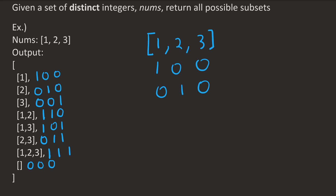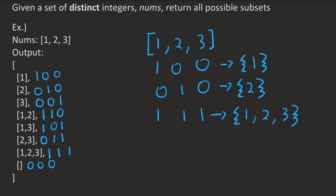Following this logic, we can come up with all the subsets for a given set by simply iterating over the bit strings. For instance, the number 1, 0, 0 gives us the subset containing only the first number in our original set. The number 0, 1, 0 gives us the subset containing only the second element. And the number 1, 1, 1 gives us the subset containing all elements. Note that the list of bit strings includes all sequences from 0,0,0 to 1,1,1, which in decimal is the same as all numbers between 0 and 7.